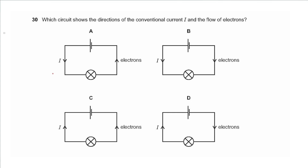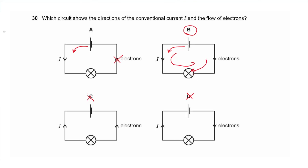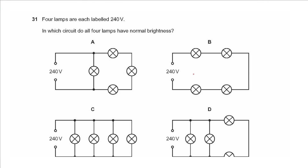Question 30 asks which circuit shows the directions of conventional current I and the flow of electrons. Current goes out of the positive terminal — A and B are correct for current direction, C and D are not. Electrons flow opposite in direction to the current, so the correct answer is B, where current is going anti-clockwise and electrons are going clockwise.